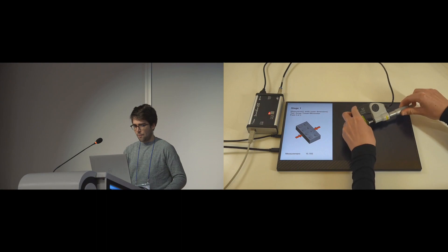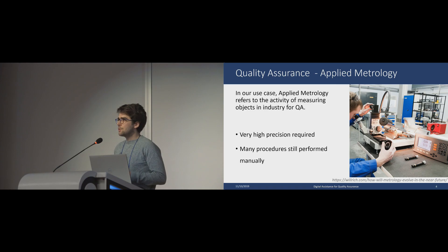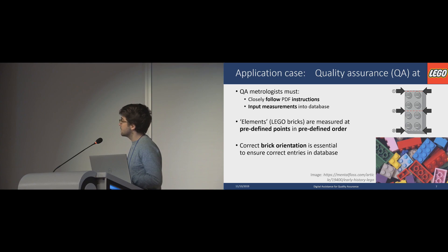What is applied metrology? In our use case, applied metrology is an activity of measuring objects for quality assurance in industry. A very high precision is required, and although many of these procedures are performed automatically, there are still a lot of them that have to be performed manually by workers.